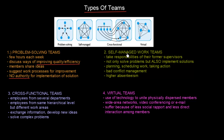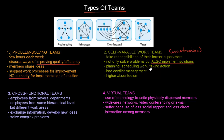The second type is self-managed work teams. I remember these by construction companies, as construction companies quite often operate with self-managed work teams. These teams take on the responsibilities of their former supervisors. As you can see from the picture, there are five team members but usually no real supervisor — they take on the responsibilities themselves. The key point is that they not only solve the problems but also implement the solutions. For example, a construction company comes to repair a house, the same group of people plans, schedules, and carries out the work — going through everything from planning to scheduling to taking action.